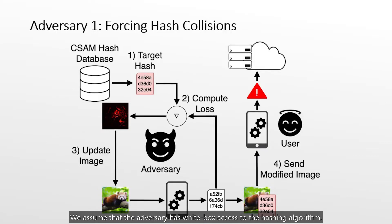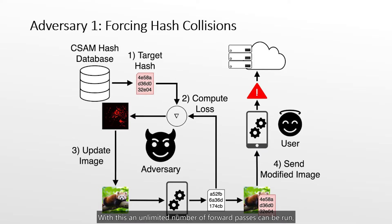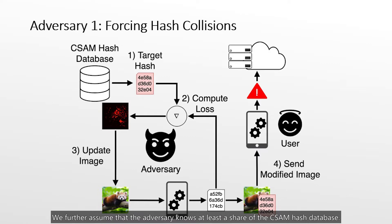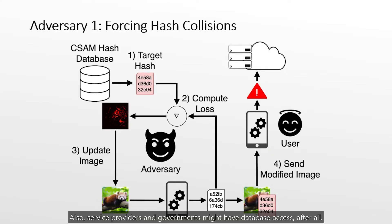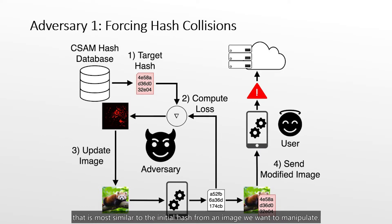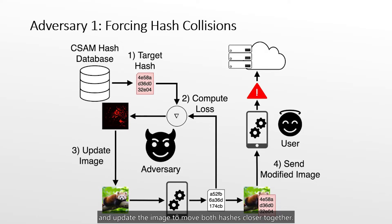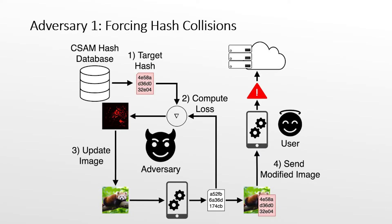For collision attacks, we assume the adversary has white-box access to the hashing algorithm — for example, by extracting the model from a user device — enabling unlimited forward passes and gradient computation with respect to the model's input. We also assume the adversary knows at least a share of the CSAM hash database, which should be feasible by gathering known CSAM collections and computing hashes, or through service provider and government database access. We then identify the target hash most similar to an image's initial hash, compute a hinge loss based on hash similarity, and update the image to bring both hashes closer together until a collision is achieved.